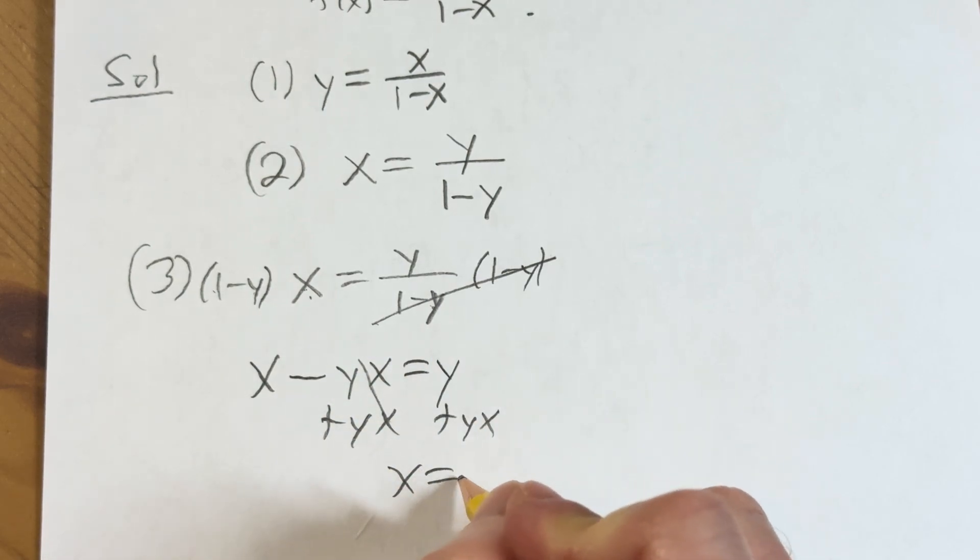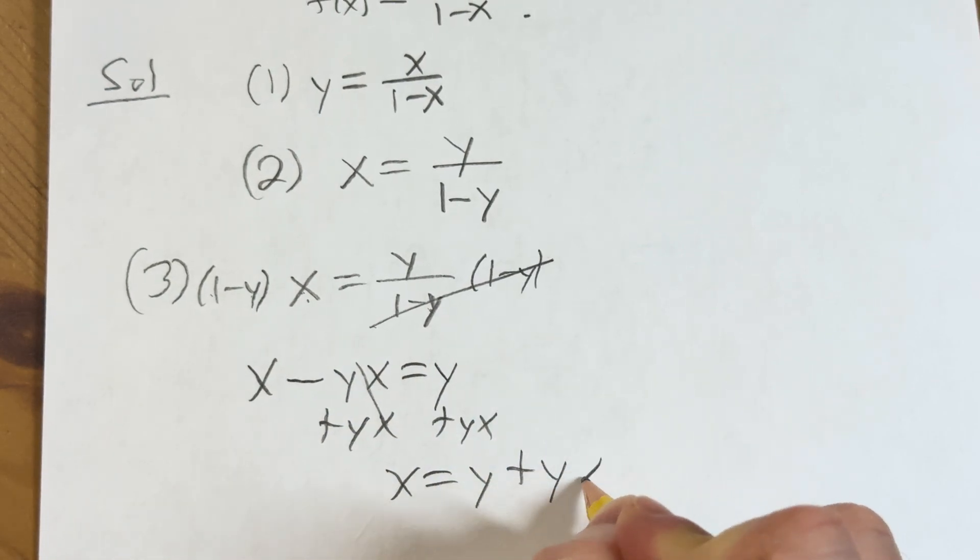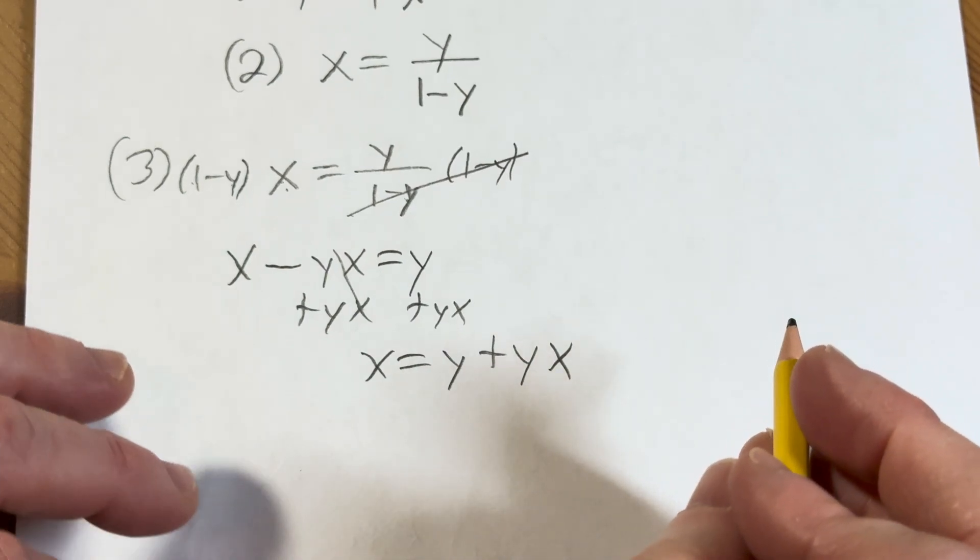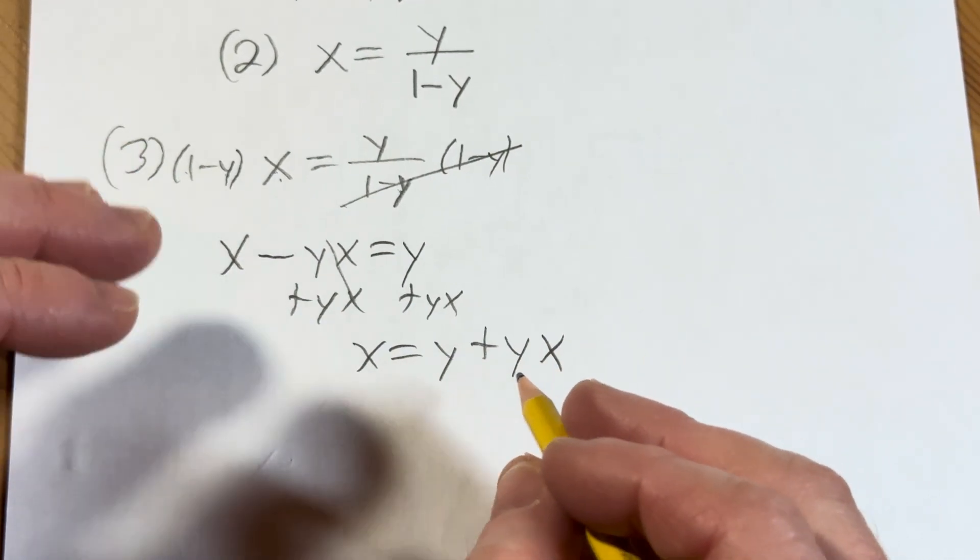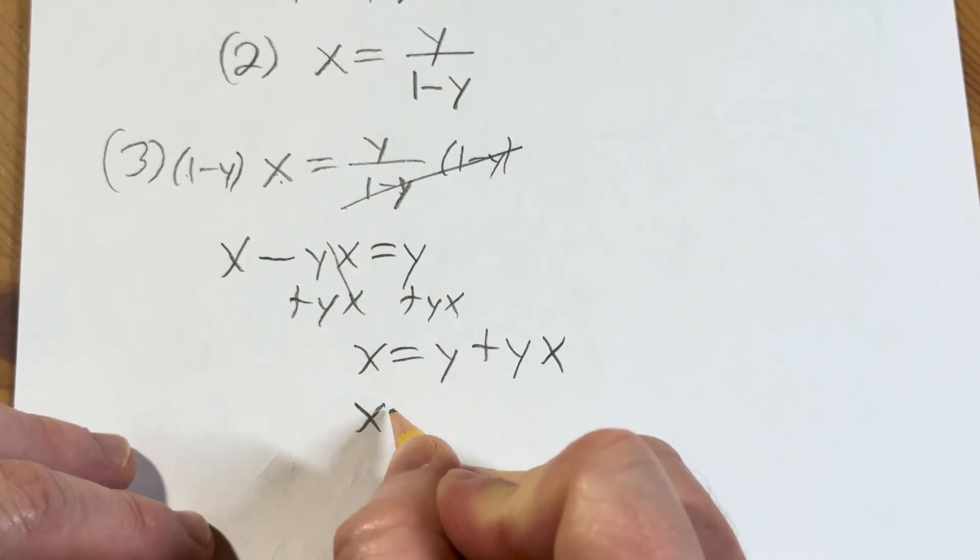We're looking for y, so we want to get everything with a y on one side by itself. When we do that, we can factor out y.